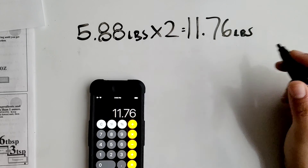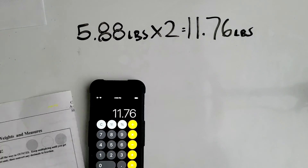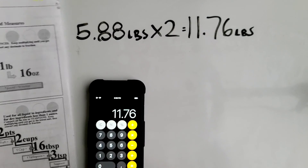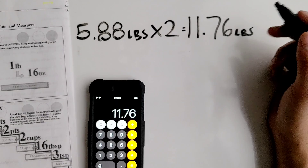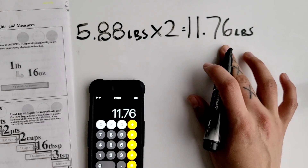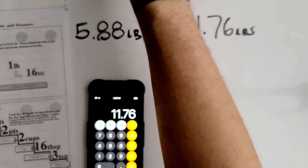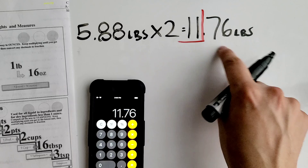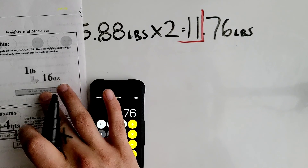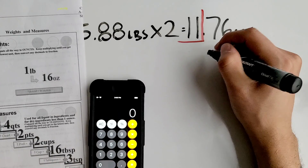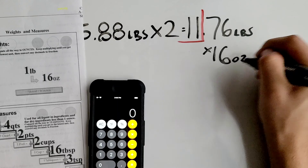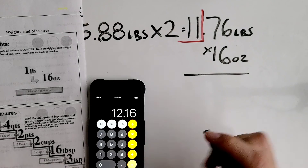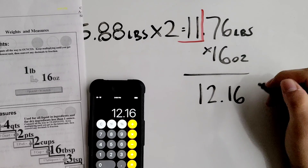So 5.88 times 2 equals 11.76 pounds. That is not the final answer because we still have a decimal. We're trying to get it to its lowest unit, so we need to convert the decimal portion into ounces by going back down the unit scale, which means we multiply. We block off the whole number 11, then multiply the remainder 0.76 by 16 ounces. So 0.76 times 16 equals 12.16 ounces. Don't forget to label everything.